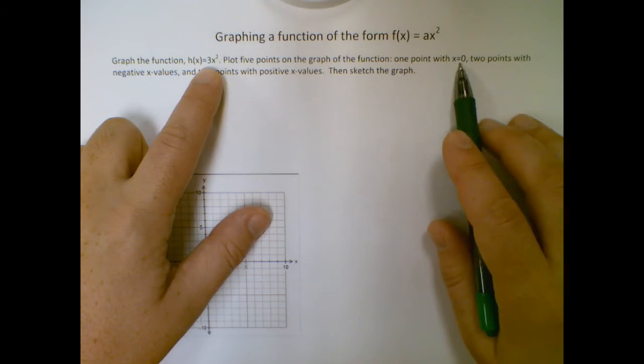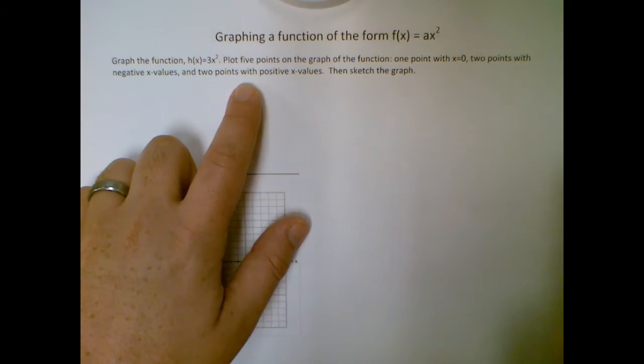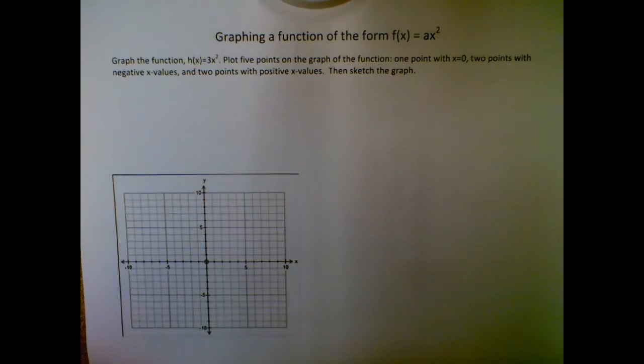One point at x equals zero, two points with negative x values and two points with positive x values. Then we're going to sketch the graph.